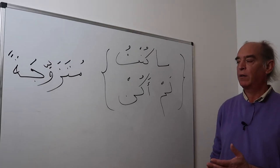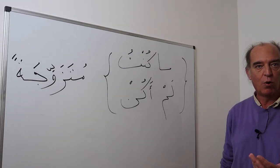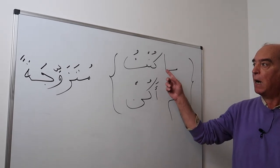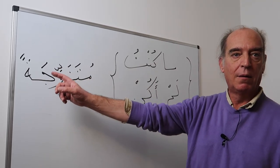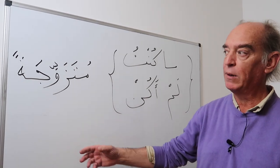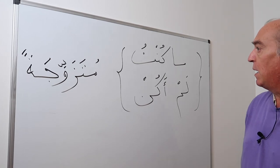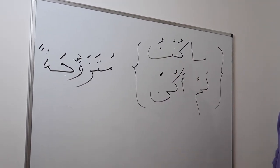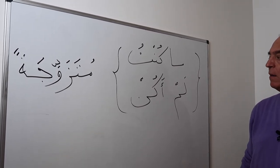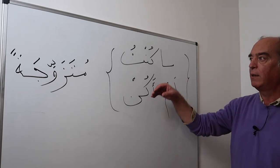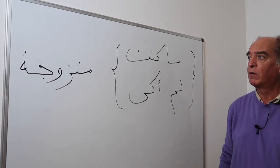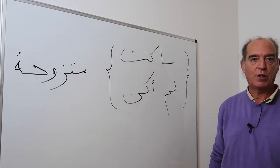You want to say 'I was not married,' and it's a woman speaking. So you can say: ma akunru mutazawijatan. Mutazawijun is married in masculine; mutazawijja in feminine. Ma akunru mutazawijatan, or lam akun mutazawijatan. Lam akun mutazawijatan is more frequent. Both mean 'I was not married.'